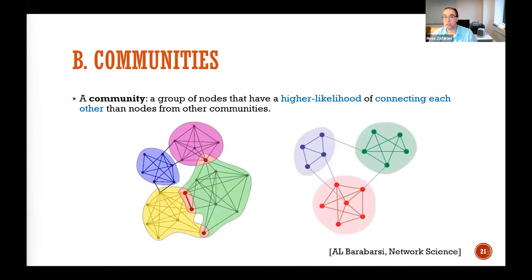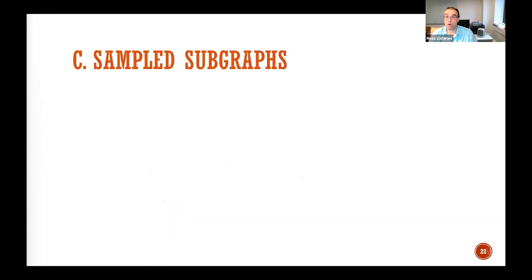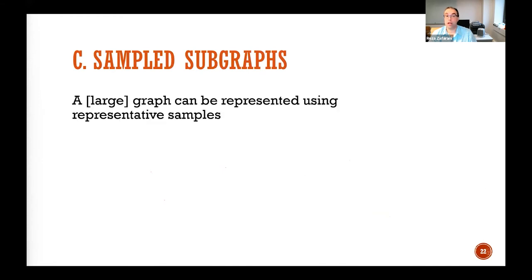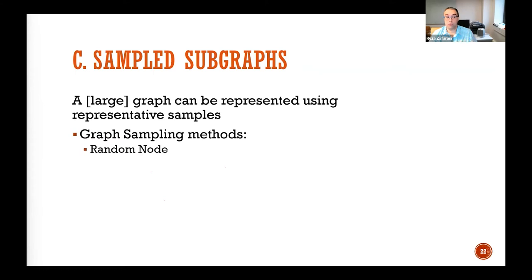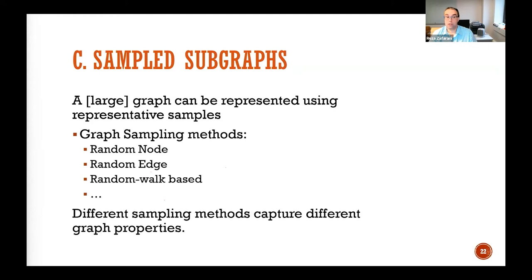You can also use communities — you divide your graph into specific communities and describe the graph using those. Or you can sample subgraphs, since a large graph can be represented using representative samples via graph sampling methods such as random node, random edge, or random walk-based methods. Based on those, you can describe your graph.